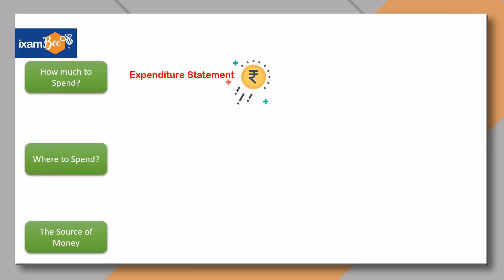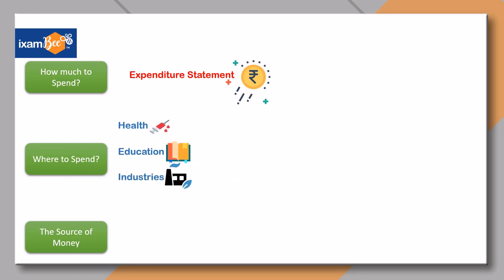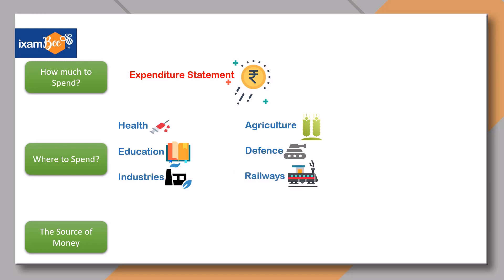It means the total amount that the Government of India is going to spend in the financial year. Once the expenditure amount is fixed, a major question is where to spend. So the government decides the heads of expenditure like health, education, industries, agriculture, defense, and railways.